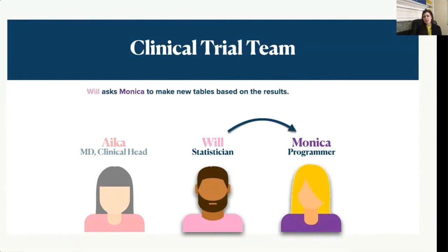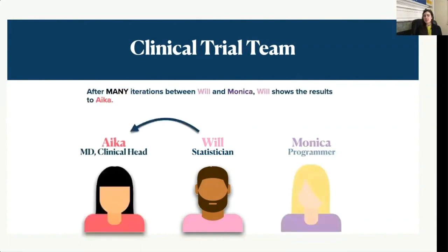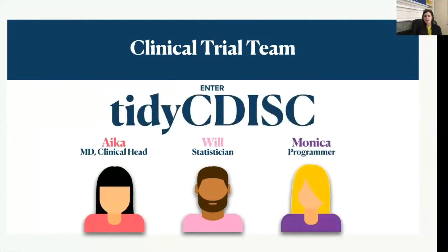Will realizes that it will be very helpful to have an extra table, so he requests Monica to create them. Monica creates the new tables and figures and sends them back to Will. Will then realizes it would also be helpful to have an extra figure and asks Monica to create them. As you can see, there's this back and forward between Monica and Will. After many iterations, Will realizes he has the desired results and sends them back to ICA. Just this oversimplified version of the process can take weeks, and that's where Tidy CDISC can help.